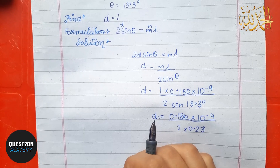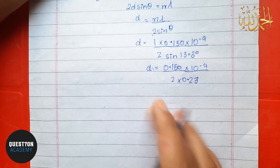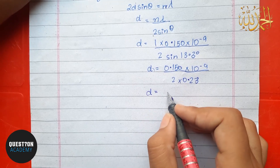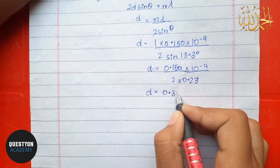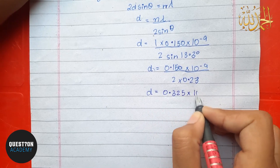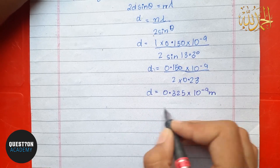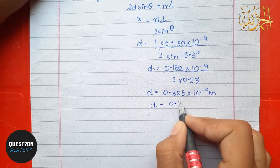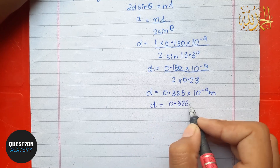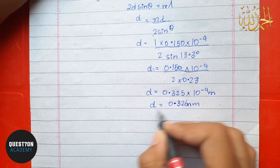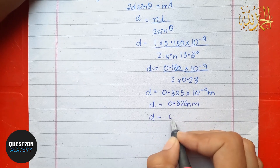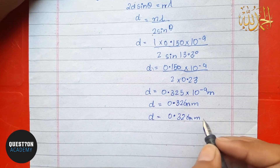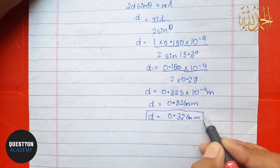Solving this, sin of 13.3 degrees is approximately 0.23. So d equals 0.150 into 10 to the power minus 9 divided by 2 times 0.23, which gives us 0.325 to 0.326 nanometer. So the final answer is d equals 0.326 nanometer.